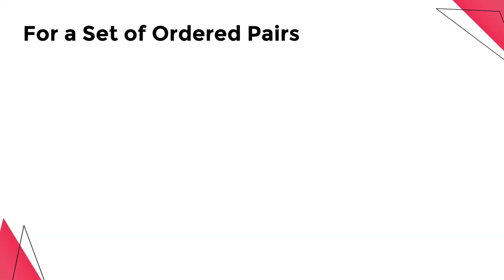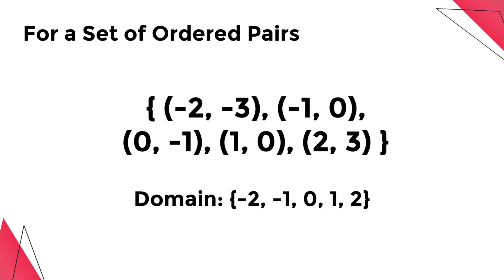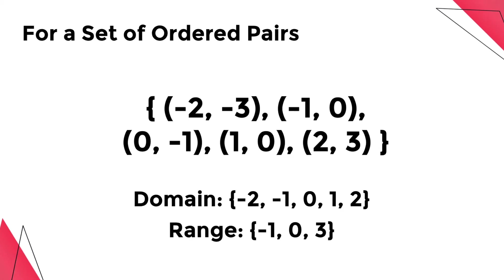For a set of ordered pairs, we simply list down the first elements, or the x values, for the domain, then the second elements or the y values represent the range. Take note that we use braces to enclose the elements of the domain and range.